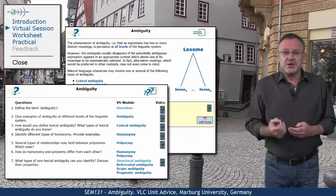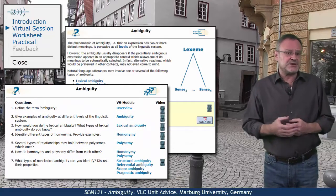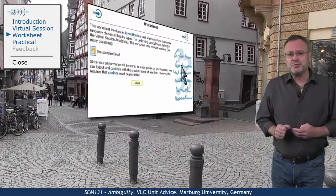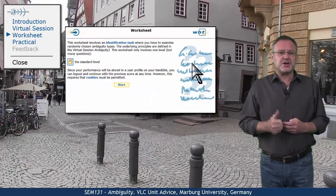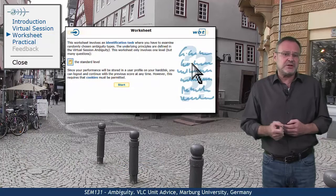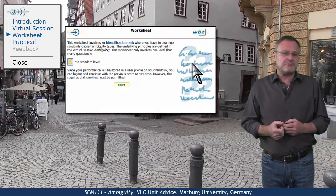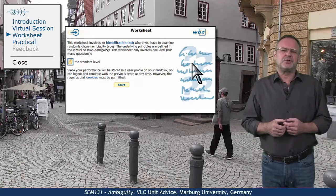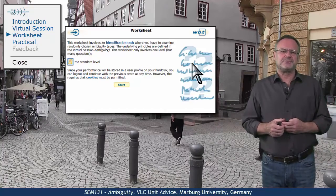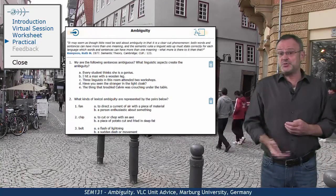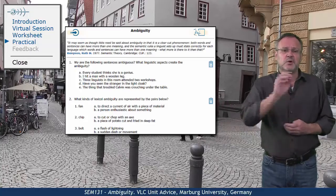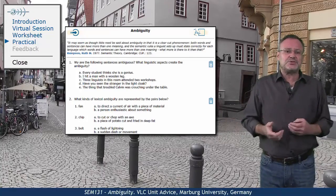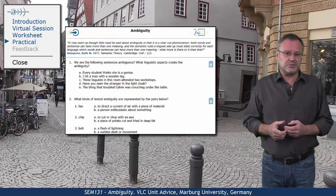In the question sheet you find the respective hyperlinks and video links for guidance. The mastery worksheet is an identification task where you have to examine randomly chosen ambiguity types. This should be easy to pass after going through the virtual session. And the practical, as usual, provides you with data — words, sentences and utterances — all to illustrate the various types of ambiguity.